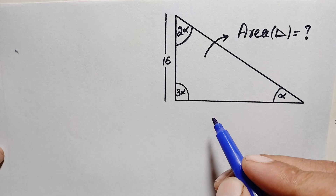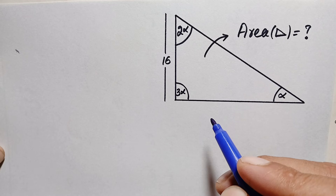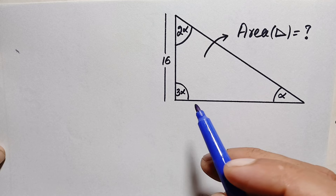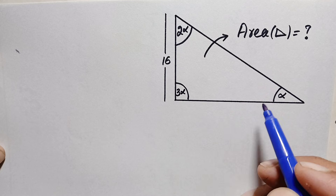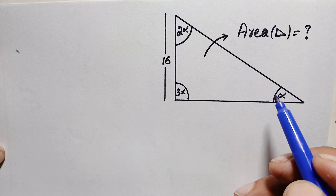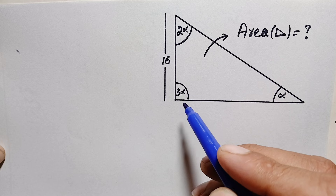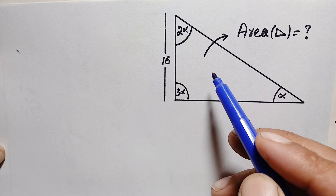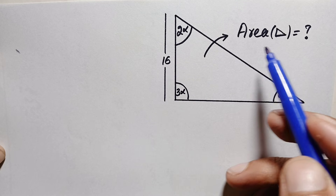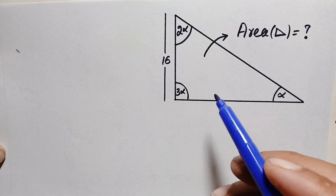Hello everyone, welcome! Today we have a new interesting geometry math problem. We are given a triangle with three different angles: alpha, 2 alpha, and 3 alpha, and a height of 16 units. Our target is to find the area of this triangle.